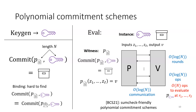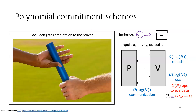If you look closely, you'll see the verifier is evaluating a polynomial in the commitment key — a different polynomial from the message polynomial that was committed to. This evaluation of the key polynomial is the expensive operation that forms the bottleneck.